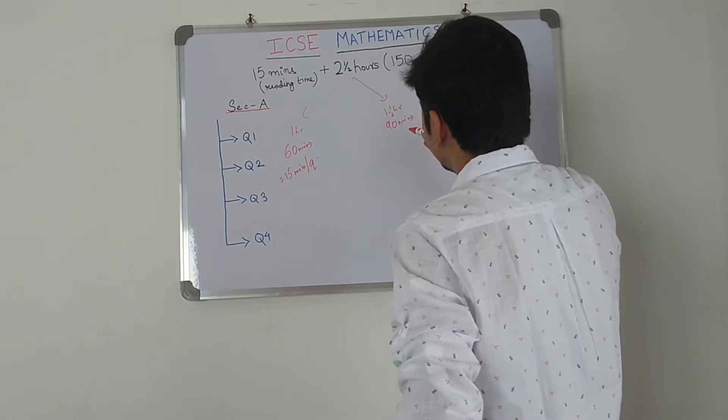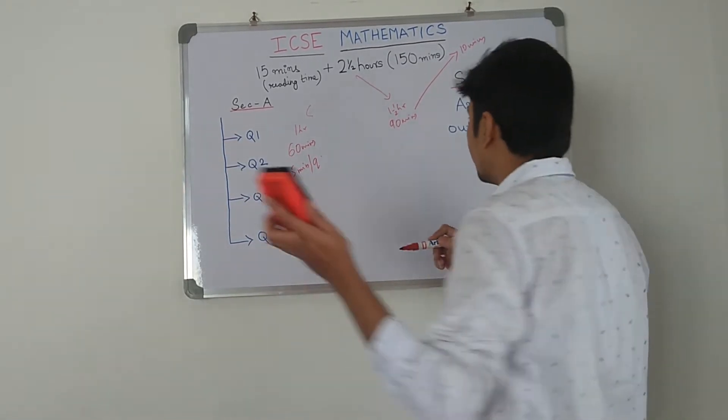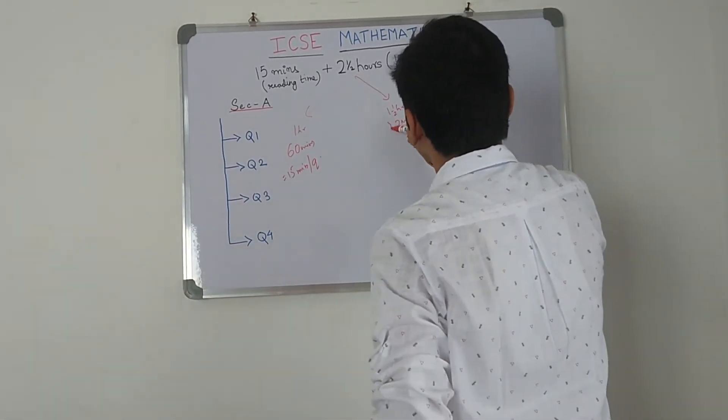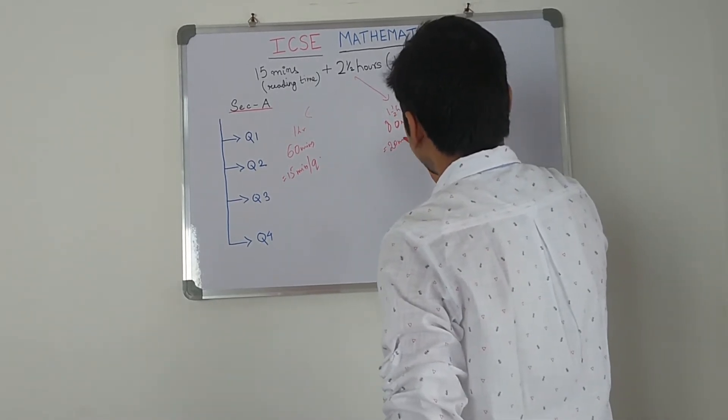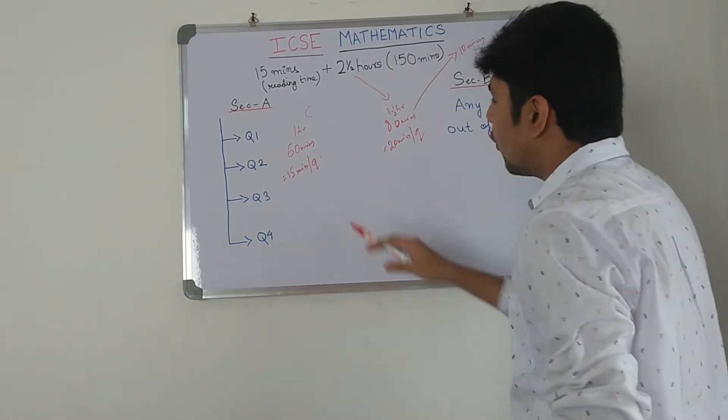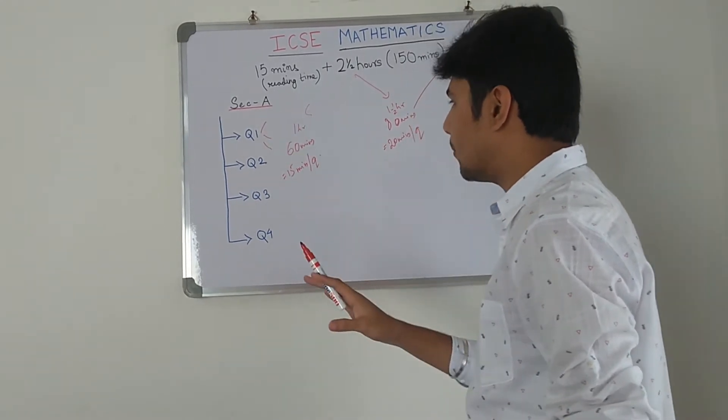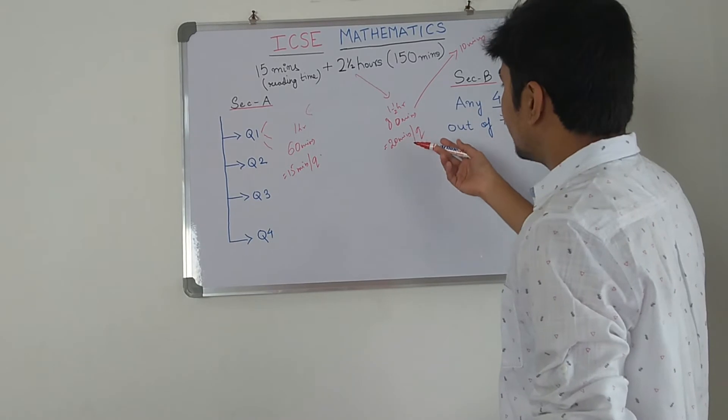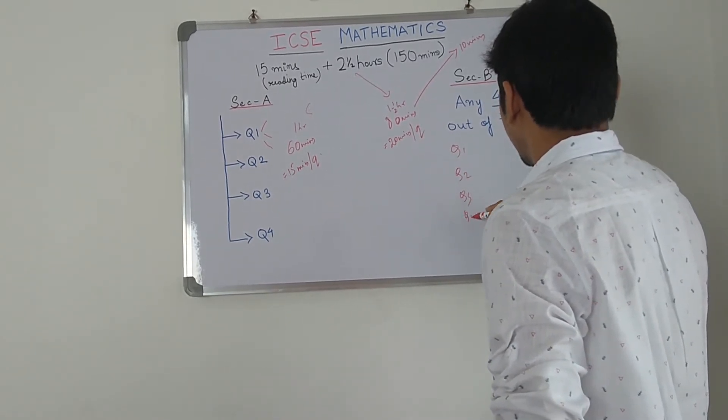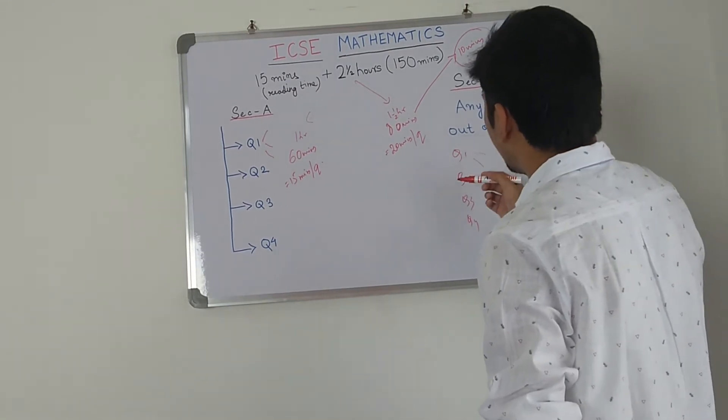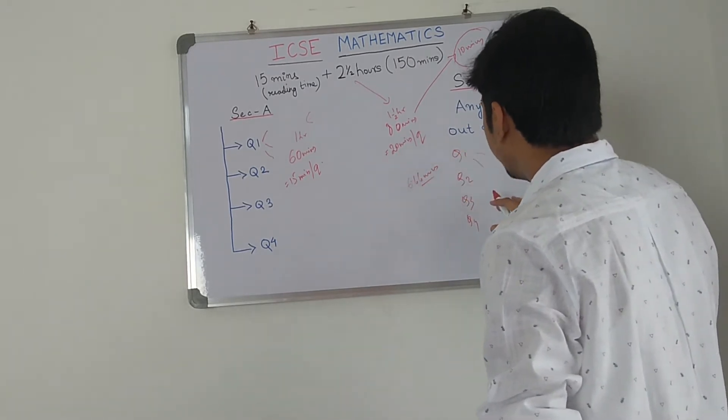Now we don't use 90 minutes. We will keep 10 minutes to the side. I will tell you later why. So we will use 80 minutes. 80 minutes divided by 4 will get 20 minutes per question. So over here you get 15 minutes per question, which means 5 minutes for each subpart. And over here 20 minutes per question. So for 3 subparts you will get 20 divided by 3 - that's 6.66 minutes for each subpart. And that's enough for any question.